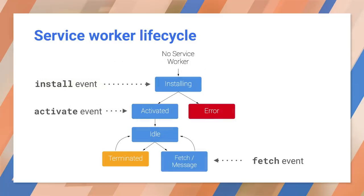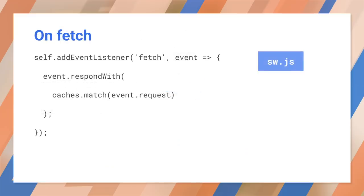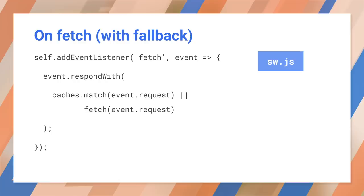The next event is the activate event, which is sent after the install event completes. We can ignore that event for now, but you can use activate as a signal to update your cache. We have to implement one more event handler: the fetch event. This triggers when the service worker intercepts a network request. We will try to satisfy this request using the cache. Fetch uses request objects and response objects. The cache contains a list of requests and matching responses, so we ask the cache to look up the request and return the response or null.